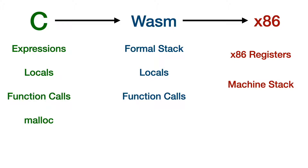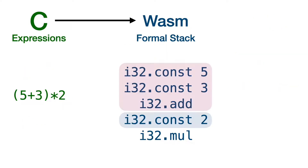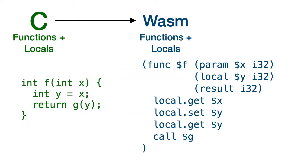I'll go through some of the main features of C, shown in green on the left, and we'll look at how to compile these to the features that WebAssembly provides, shown in blue in the middle column. Compiling expressions is pretty straightforward because WebAssembly is a stack machine, so we can compile recursively the left and right operands of an expression and then output the correct WebAssembly instruction for that C operator. Local variables in C are easy to compile because WebAssembly provides a notion of functions and local variables. Function calls in C translate directly to function calls in WebAssembly.